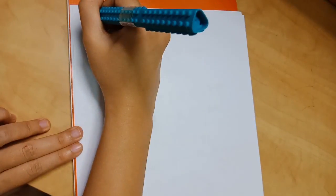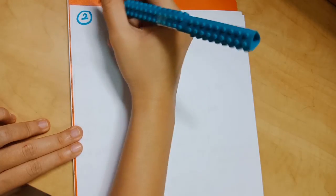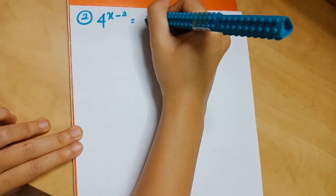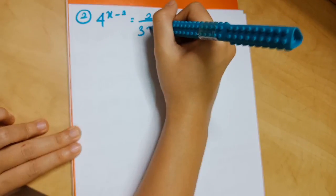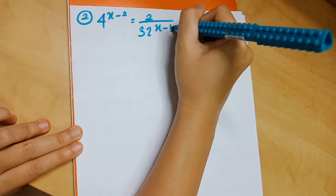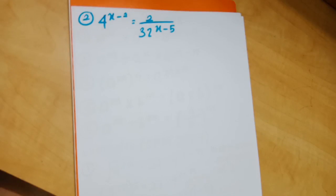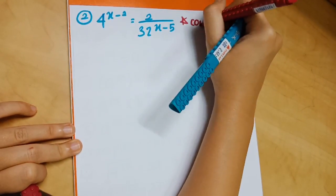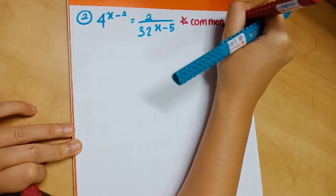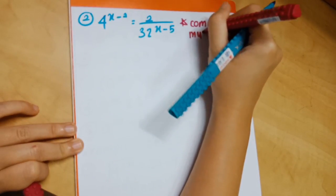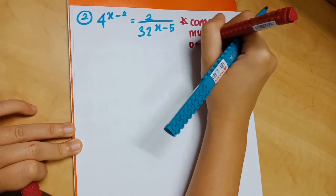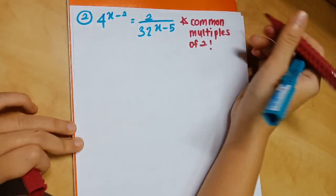If you didn't fully understand the previous example, don't worry — we'll go through another one more slowly. The equation is 4 to the power of (x−2) equals 2 over 32^(x−5). As before, the first step is to identify the common base, which here is 2 for the numbers 4, 2, and 32.